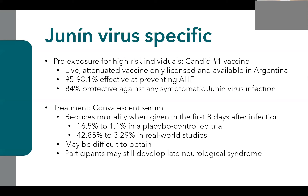Another potential treatment for Junin virus infection is convalescent serum from humans who have had previous infection. Several studies have shown it reduces mortality when given within the first eight days after Junin virus infection — a window when symptoms are still nonspecific, requiring proactive risk-factor inquiry. Studies show convalescent serum has brought mortality down to the low single digits from 16–40%. Caveats: it may be difficult to obtain outside Argentina, and patients treated with it can still develop late neurological syndrome.